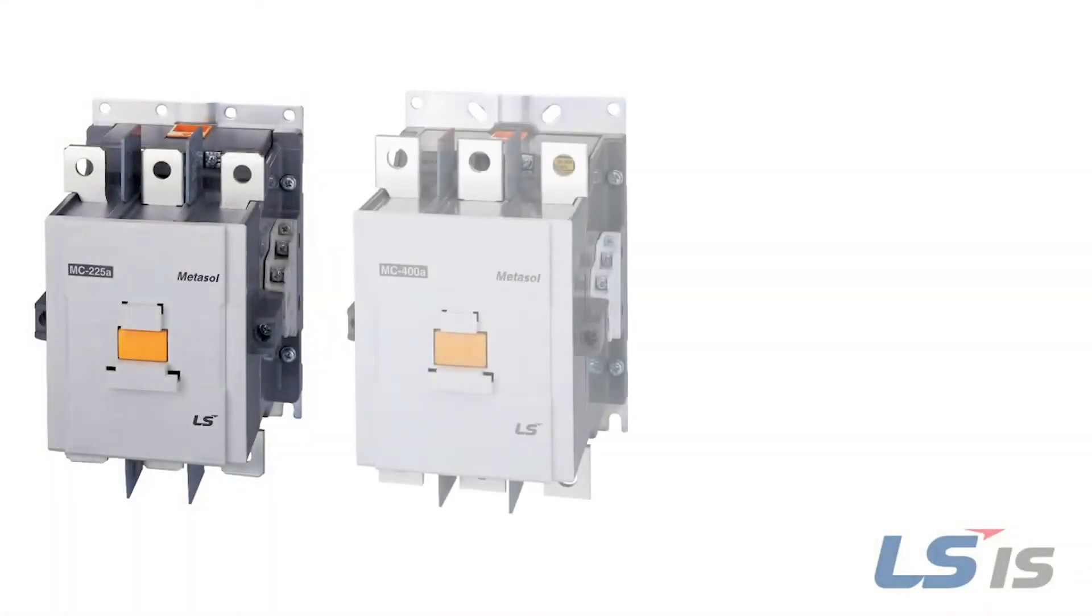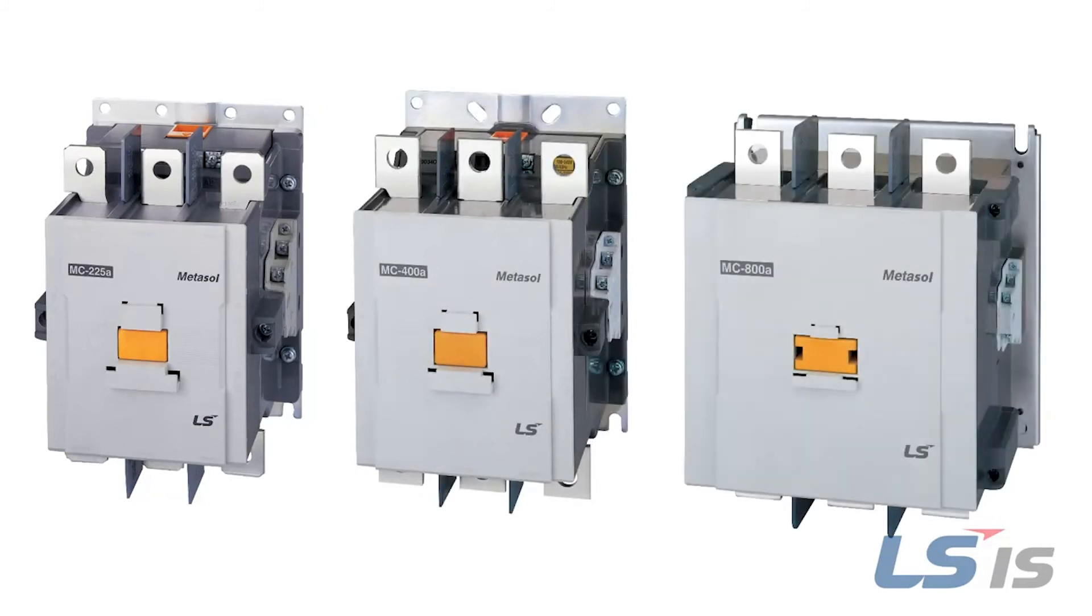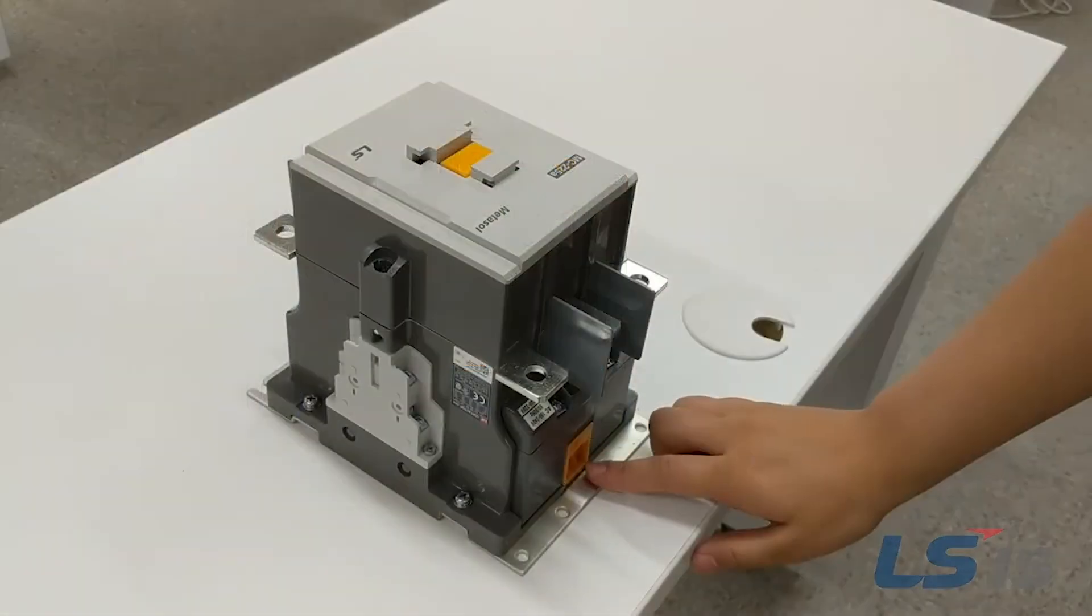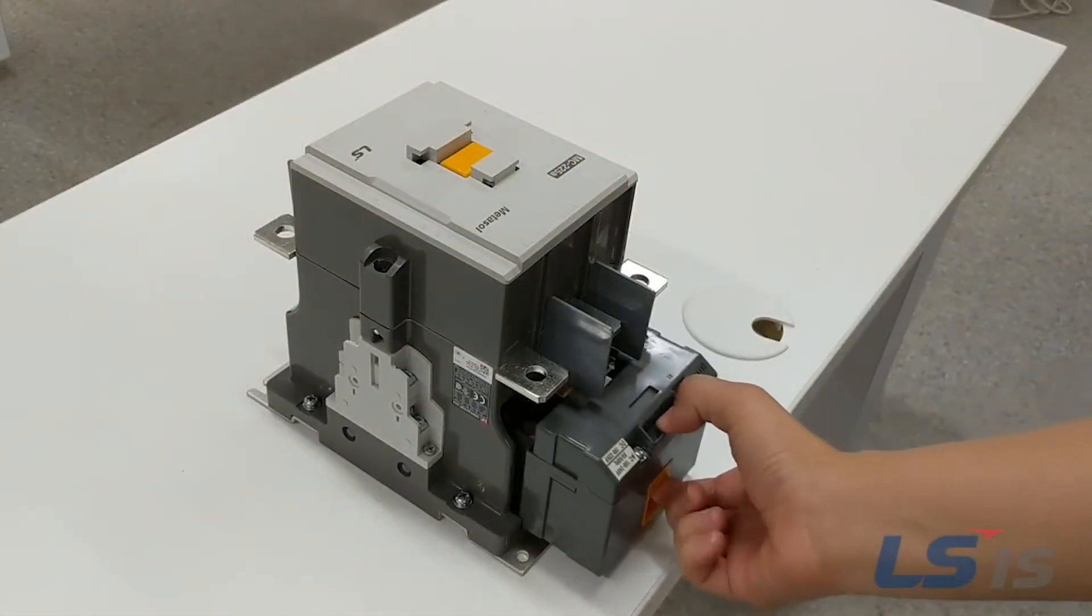For the MC 225M frame to 800M frame contactors, remove the contactor from the box and lay on a flat surface. Locate the orange coil locking mechanism, push it up and pull out the coil.